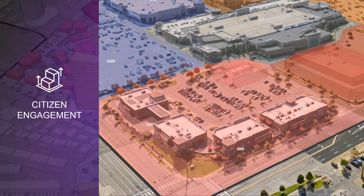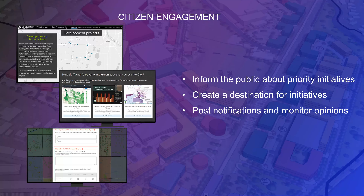For citizen engagement, there are three pillars. One is informing the public about priority initiatives — for example, if you're building a hospital, can you get feedback from the public? Another is creating a destination for those initiatives: where can people go to see progress, whether through a story map or a website where all information about the initiative is hosted? The third is posting notifications and monitoring opinions — you post something and through a dashboard you can see how many people support it or have different opinions, feeding into your policies and workflows.